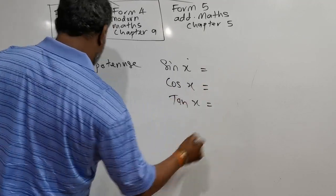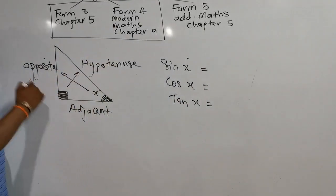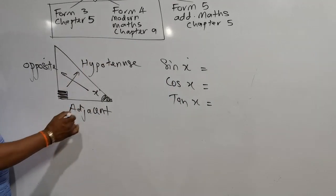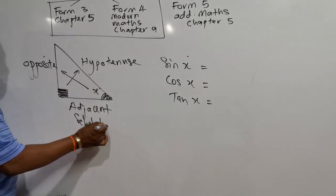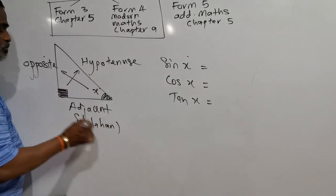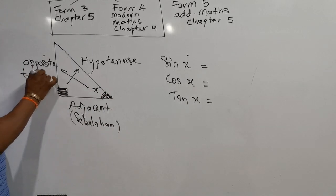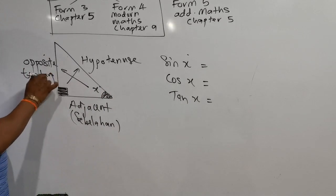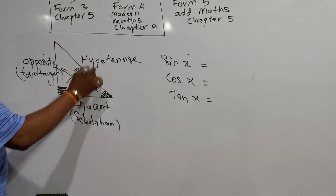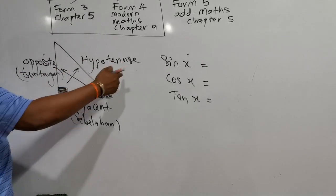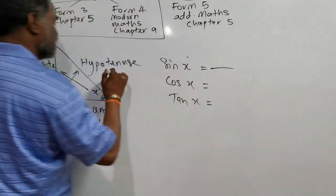For students using Bahasa Melayu: hypotenuse is still hypotenuse. Adjacent in Bahasa Melayu is called 'sebelahan' — because the angle is beside, it is called sebelahan. Opposite is called 'tentangan'. To find sin, the formula is fixed. I use H for hypotenuse.